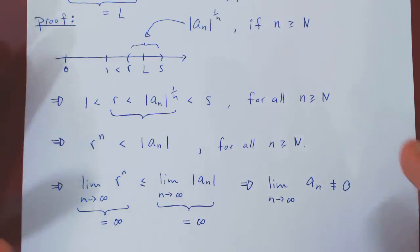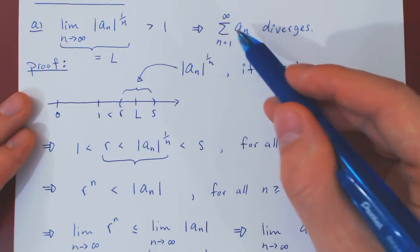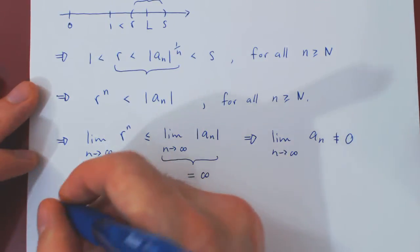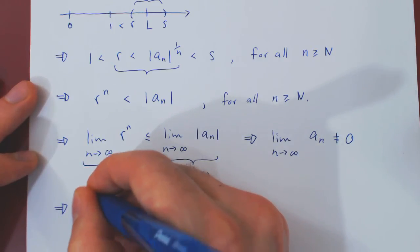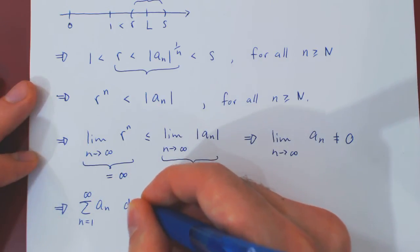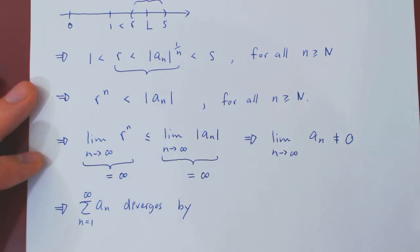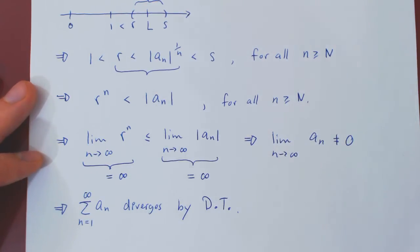And now we can simply quote the divergence test. We are trying to sum terms, this is just a1 plus a2 plus a3 and so forth, and when n is large, the terms are not shrinking to zero, they are not small enough, therefore they are too big, therefore the series diverges by the divergence test. And we can simply write DT for divergence test, which completes our proof.